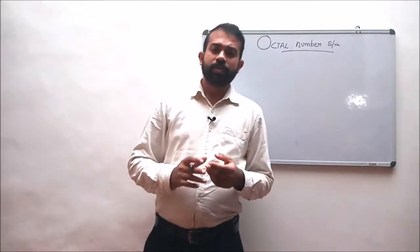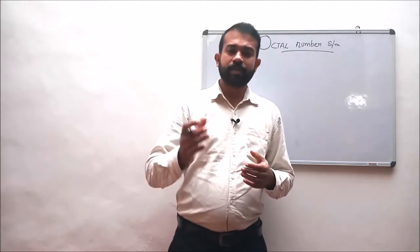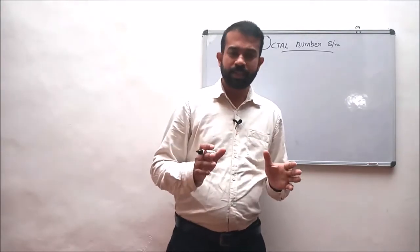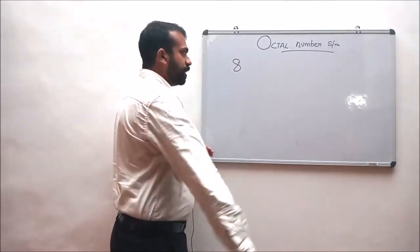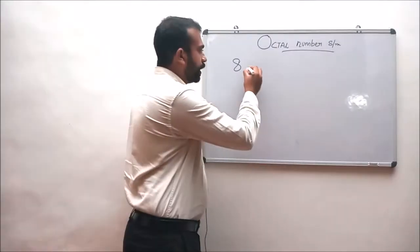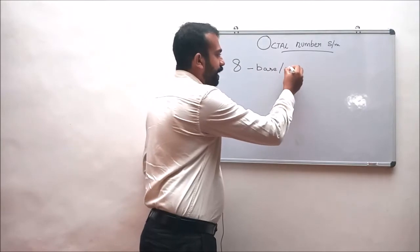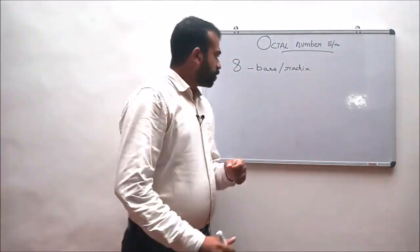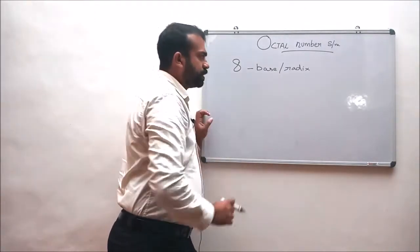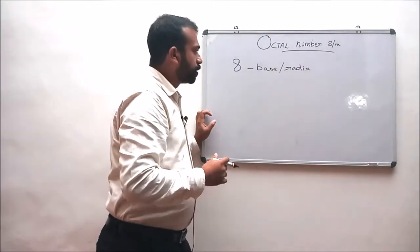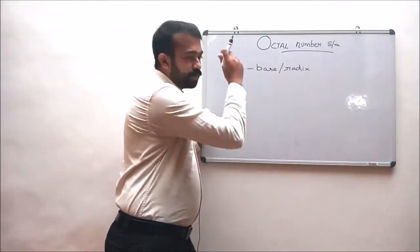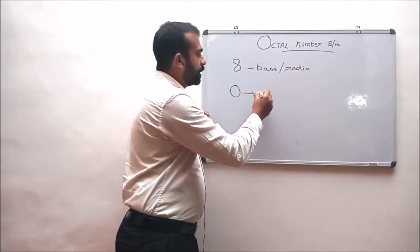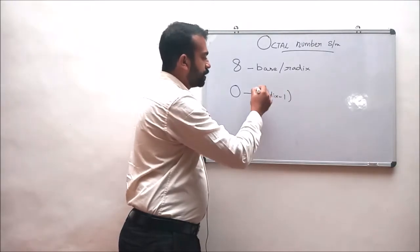As we all know, number systems are based upon what base or radix we are using. In the octal number system, the radix or base used is 8, that is why the number system is known as the octal number system. In a number system based on this radix value, the total number of digits are counted using this radix value. The limit of numbers is counted using the equation 0 to radix minus 1.